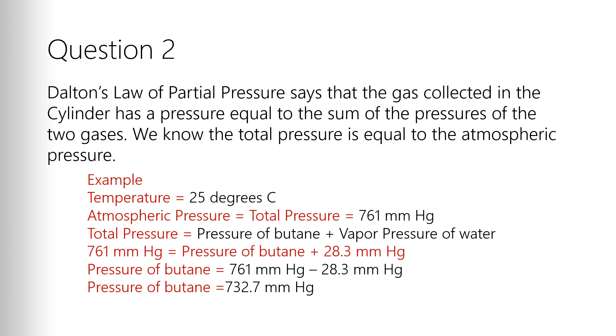We know that the temperature of the system is 25 degrees Celsius in my example here. We then go back to the report page and on the report page there is a chart table and on that table you look for 25 degrees Celsius and you see at 25 degrees Celsius the vapor pressure of water is 28.3 millimeters of mercury. So then we rearrange the equation and solve for pressure of butane. So pressure of butane is now equal to the total pressure minus the vapor pressure of water. So 761 minus 28.3. That gives us a value of 732.7 millimeters of mercury. That's the pressure of the butane inside the cylinder.